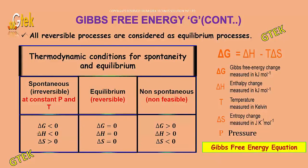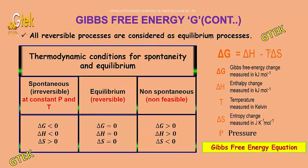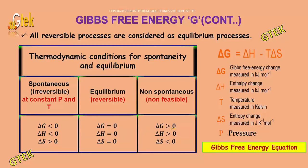For the spontaneous condition, the delta G value is less than zero, delta H value is less than zero, and delta S value is greater than zero. For the equilibrium condition, all values are equal to zero. And for the non-spontaneous condition, delta G is greater than zero, delta H is greater than zero, and delta S is less than zero.